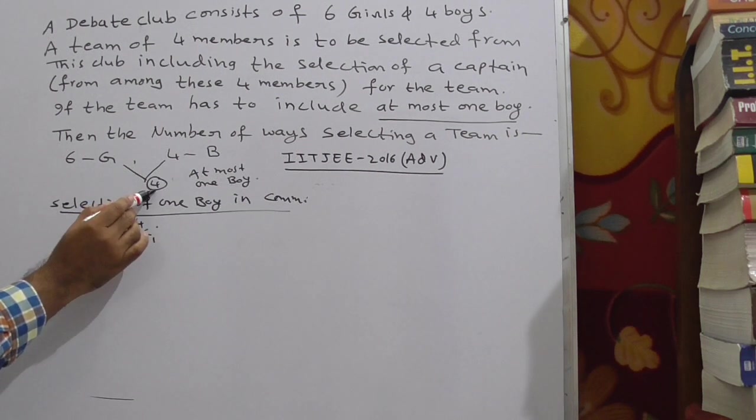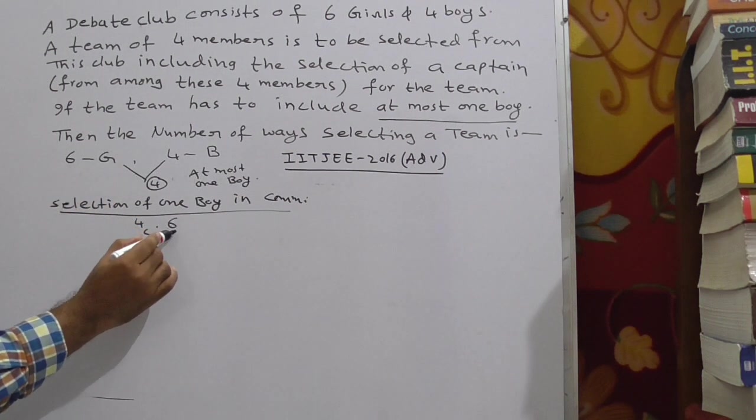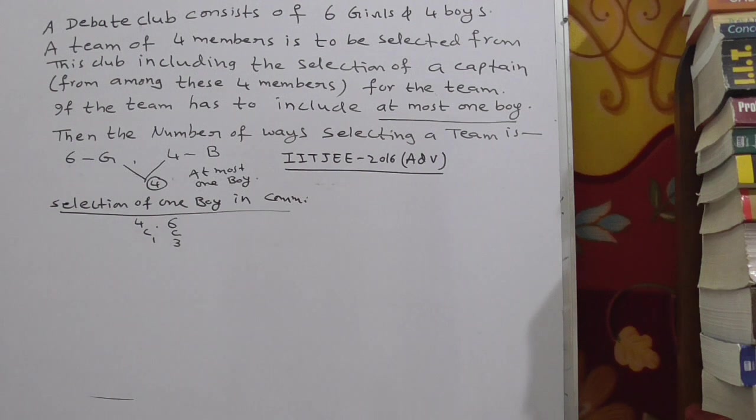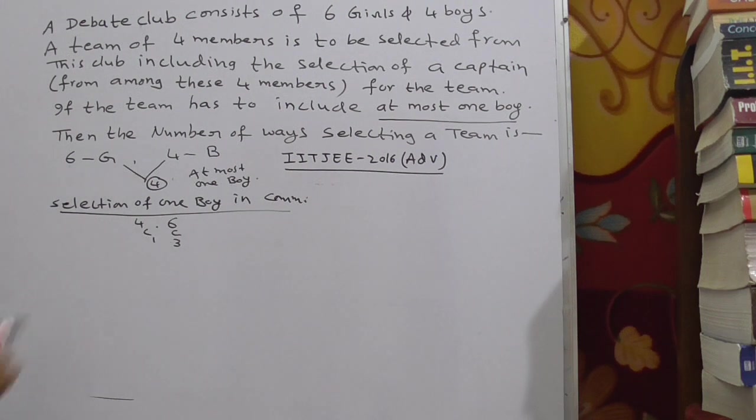So total you have to select 4. The remaining 3 should be from girls. 6 girls are there. Select 3 girls. This is permutations and combinations concept. Here we are using combinations. So this is the number of 4 members selected here with 1 boy.